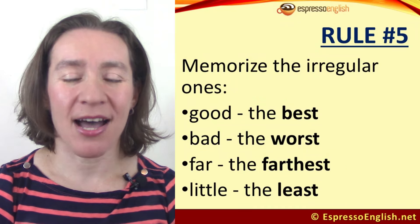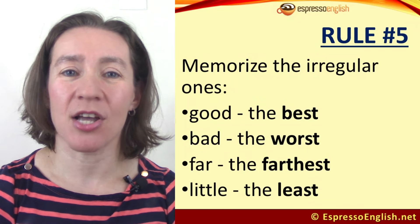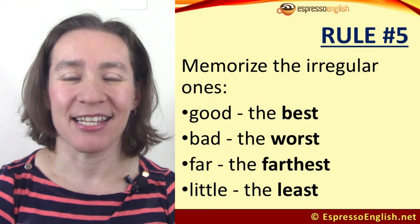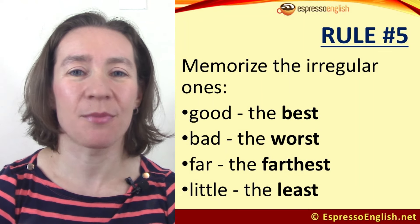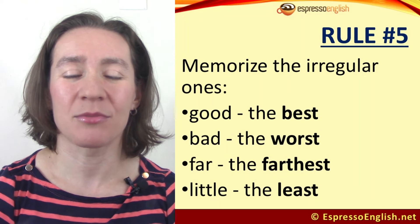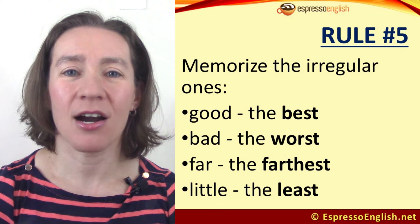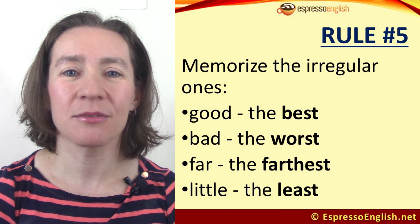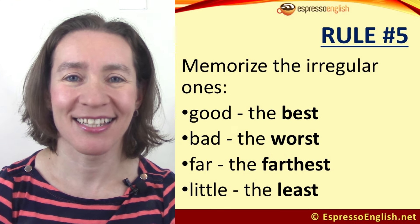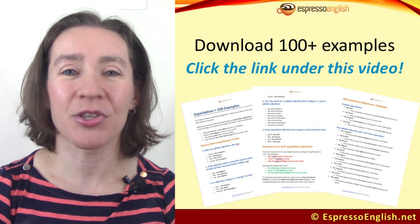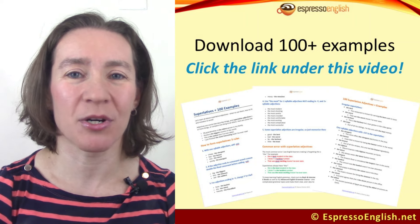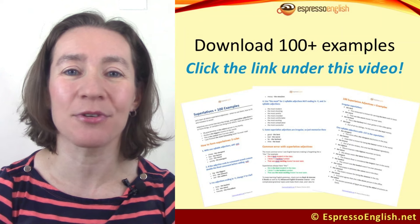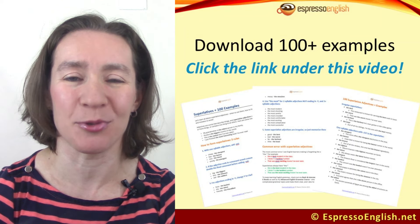Rule number five: some superlative adjectives are simply irregular, so just memorize these. Good becomes the best. Bad becomes the worst. Far becomes the farthest. And little becomes the least. You can see sentences with all these superlatives when you download the free lesson PDF — make sure to get that so you can really see how these are used.